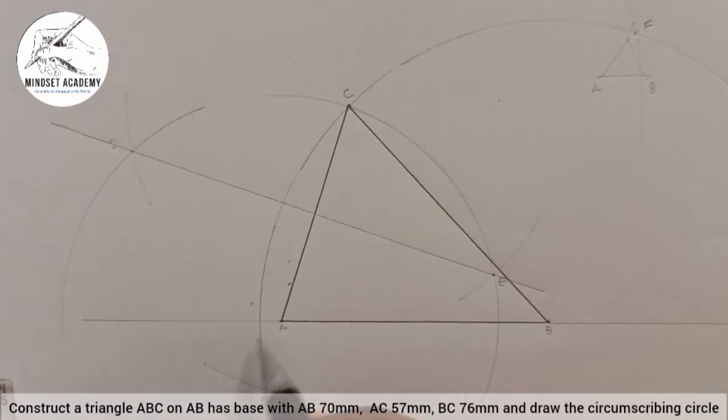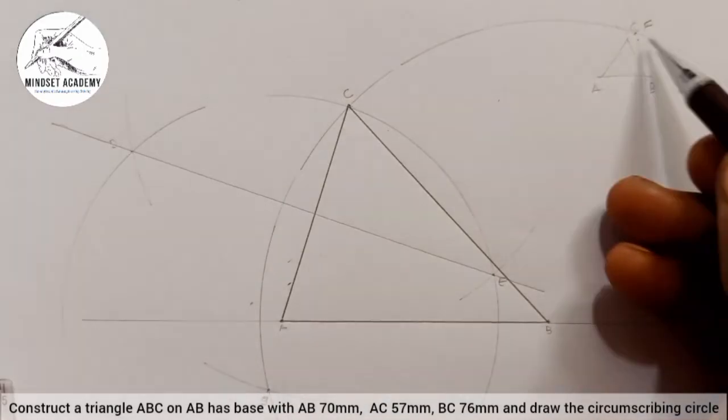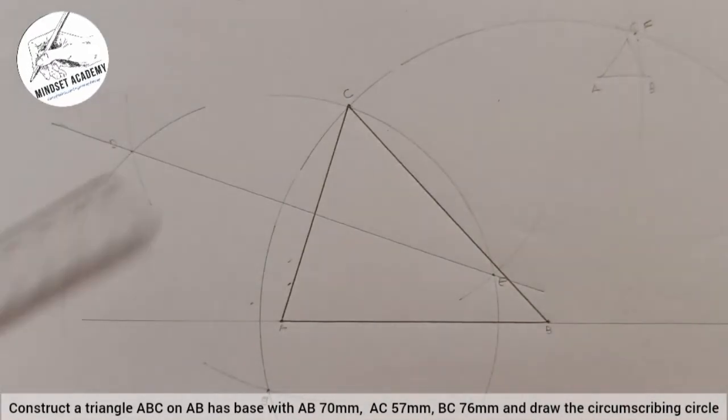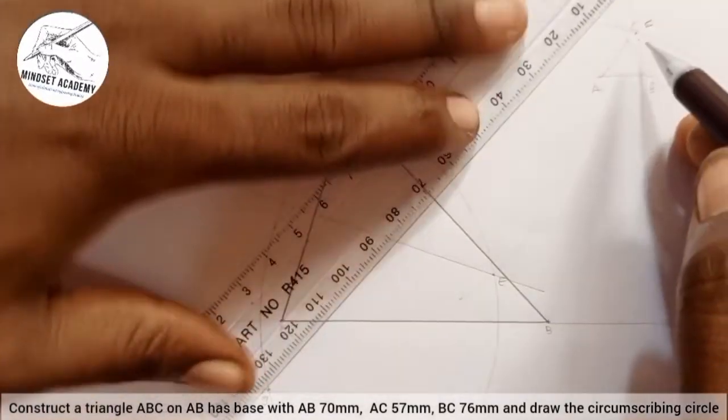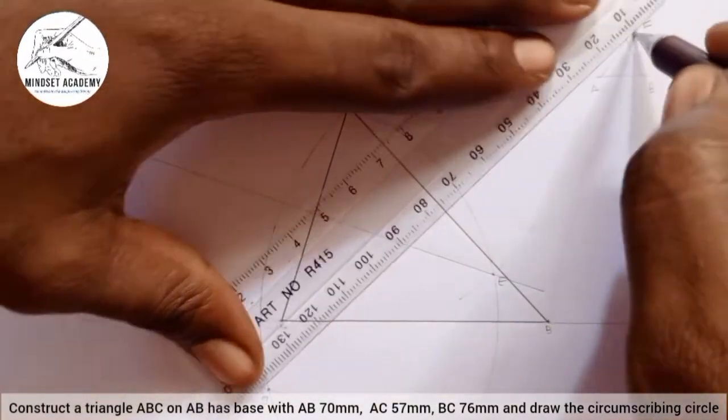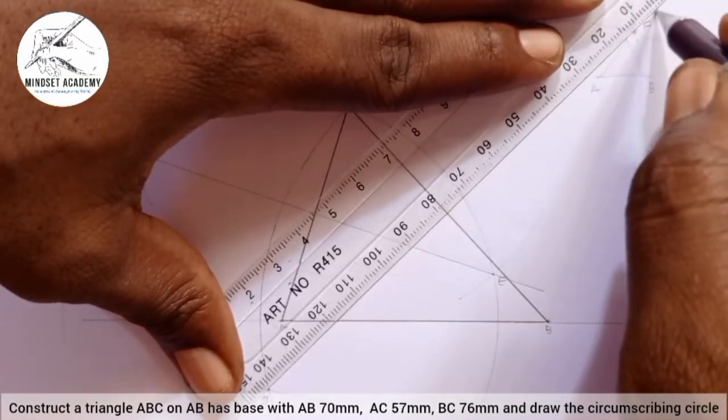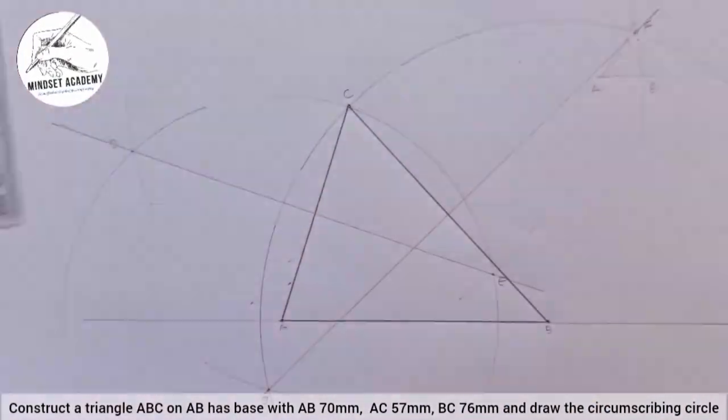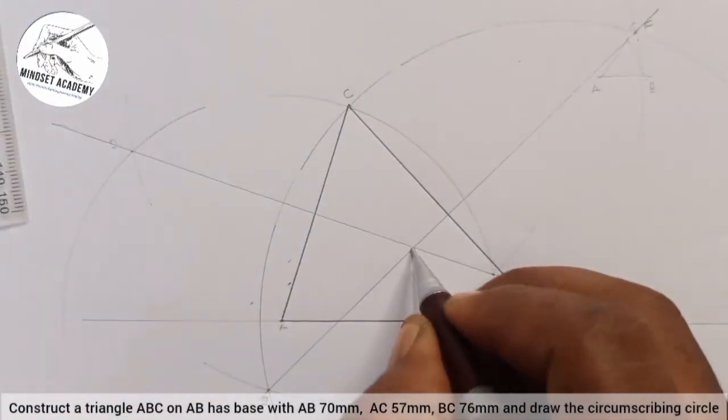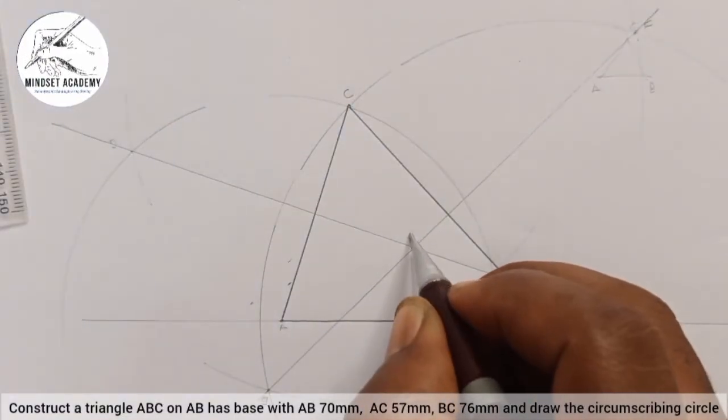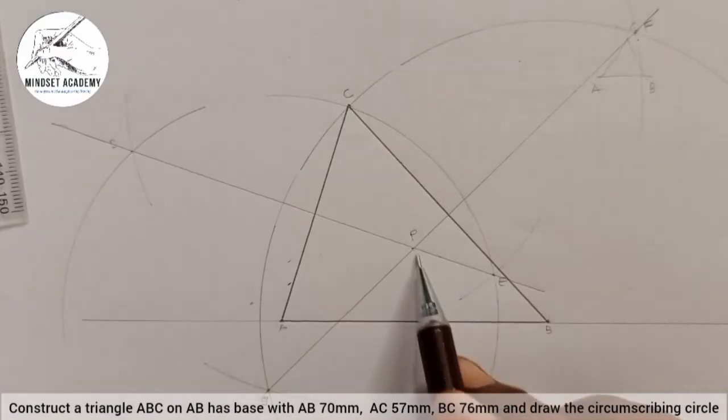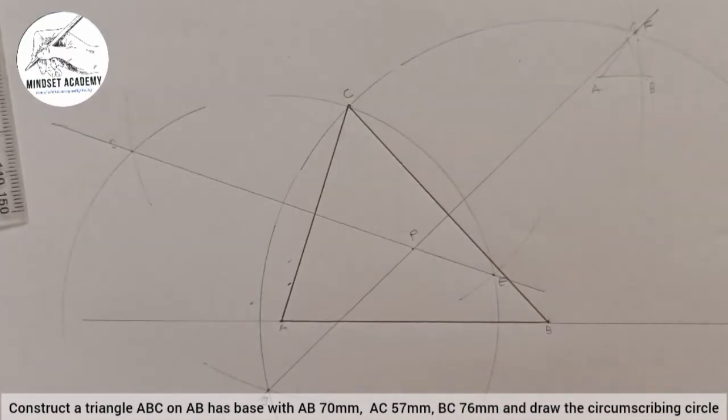So where they meet, F and G, I am going to take my metal rule and connect point F and G together. So where they meet here I will call it point P. The point of the intersection is point P. That will be the point at which I can draw my circumscribing circle.